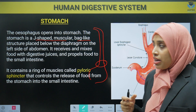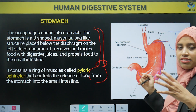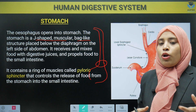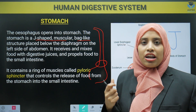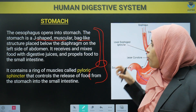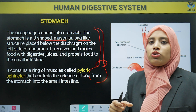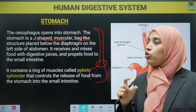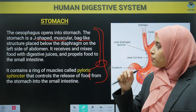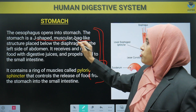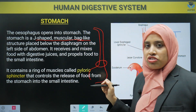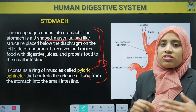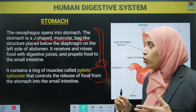The stomach is a bag-like structure. Like a bag where you keep books, pens, pencils, erasers — your lunchbox — here only food gets entry. So it is a J-shaped, muscular, bag-like structure which is placed below the diaphragm.